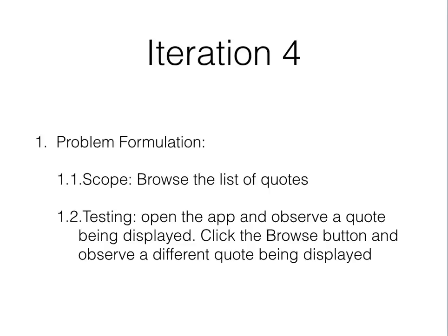The process has three steps: problem formulation, where we define the scope and how we're going to test; solution formulation, where we define the solution; and implementation, which is the action plan. The scope of this iteration is to browse the list of quotes. I have a list of quotes being displayed, and I just want to keep going through more than one without having to close and reopen the app.